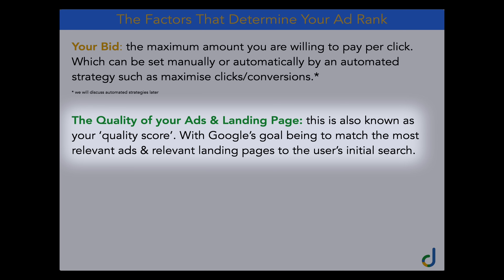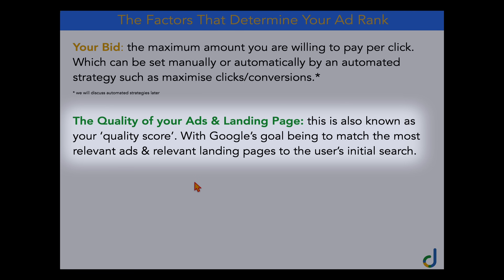The other core factor is the quality of your ads and landing page, also known as your quality score. Google ultimately wants to match the most relevant ads to the most relevant landing pages relative to the user's initial search. If Google continues to serve poor quality ads, people will stop clicking them — and that's how Google gets paid. The quality of your ads and landing pages puts downward pressure on costs. If you've got better ads and landing pages than competitors, you may save 10 to 20% on your cost per clicks.